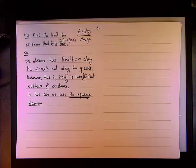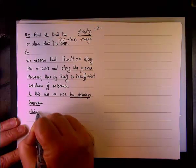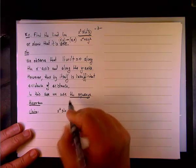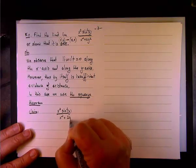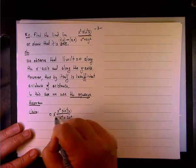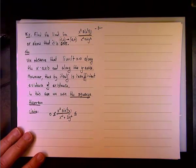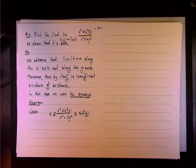Let's make a claim first. The claim will be the following: x squared sine squared of y over x squared plus 2y squared is greater than or equal to 0, but it's also less than or equal to sine squared of y.